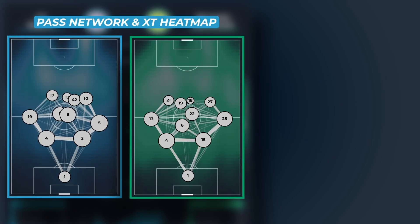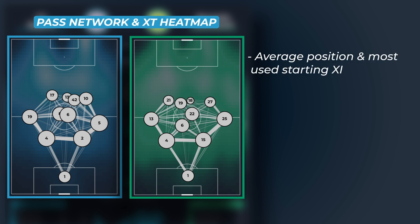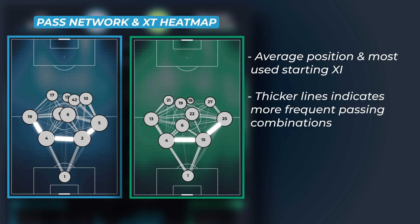Next up, the pass network shows average positions for both teams' most used starting formation, with each circle indicating the role, and the number being the shirt number of the most common player in that position. The thickness of the lines measures the quantity of passes between players, highlighting the most common combinations within the team.